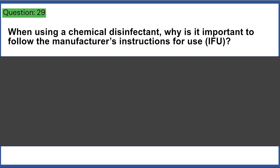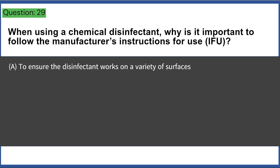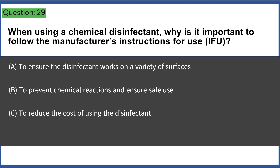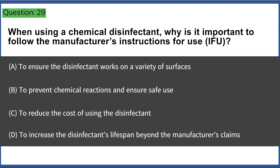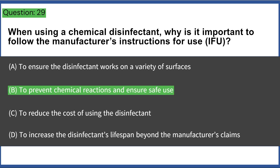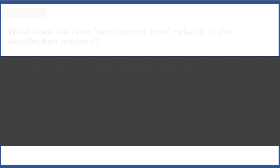When using a chemical disinfectant, why is it important to follow the manufacturer's instructions for use (IFU)? a) to ensure the disinfectant works on a variety of surfaces, b) to prevent chemical reactions and ensure safe use, c) to reduce the cost of using the disinfectant, d) to increase the disinfectant's lifespan beyond the manufacturer's claims. Answer: B, to prevent chemical reactions and ensure safe use.